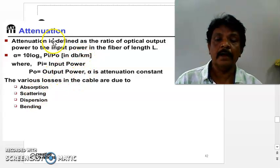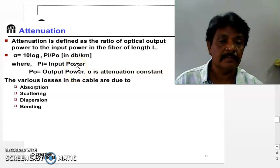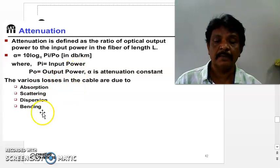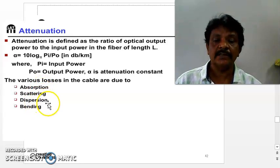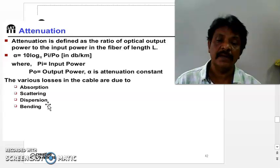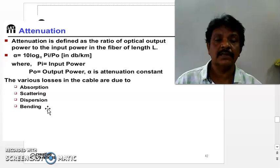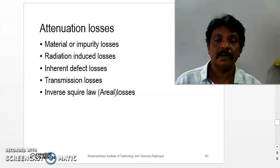The optical fiber attenuation or signal loss depends upon these factors: absorption losses, scattering losses, dispersion losses, and bending losses. These are the four variations due to which loss is happening in the case of optical fiber.